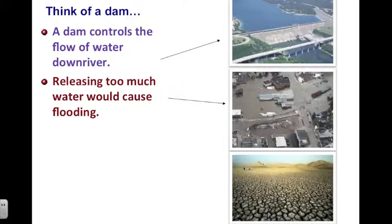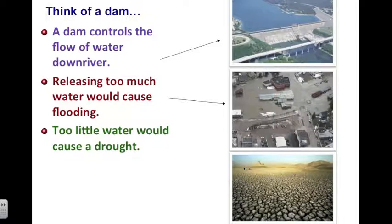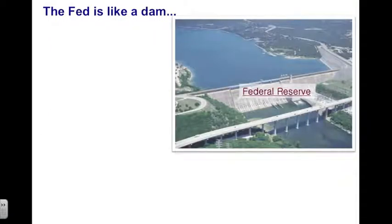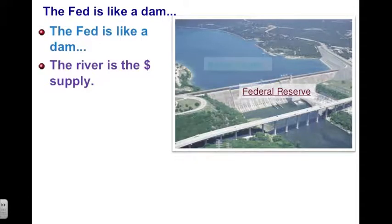At the same time, if we had too little water, this could also pose a problem because we could end up with a drought. So there's an analogy to be made here. A dam controls a water supply in the same way that the Federal Reserve controls the money supply. The dam is like the Federal Reserve; the water is the money supply.